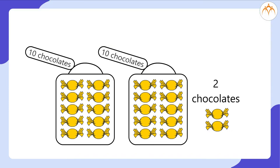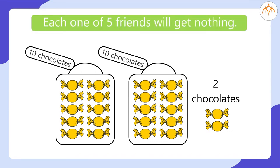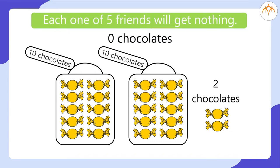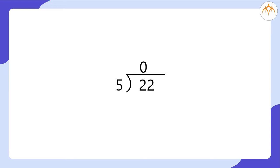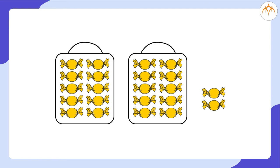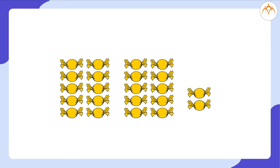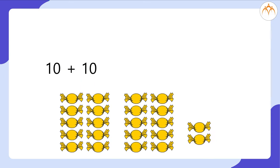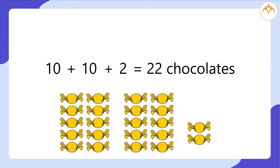Not possible, right? I will not open the bags and try to distribute this way. Each one of the 5 friends will get nothing — means 0 chocolates. So we write 0 as the first digit in the quotient. Now, I will have to loosen these 2 bags of chocolates so that I have 10 plus 10 plus 2, equal to 22 chocolates.